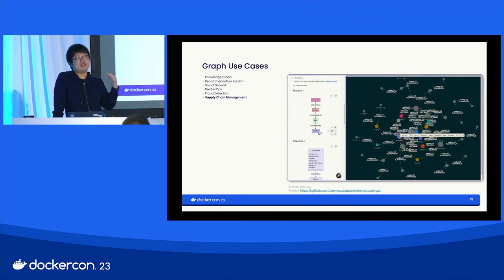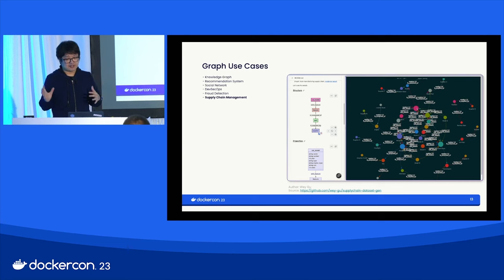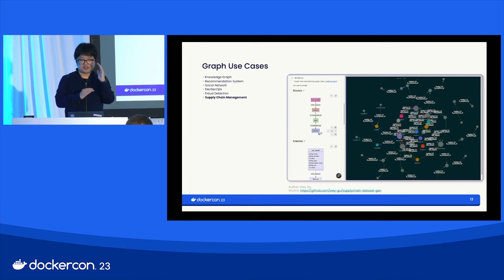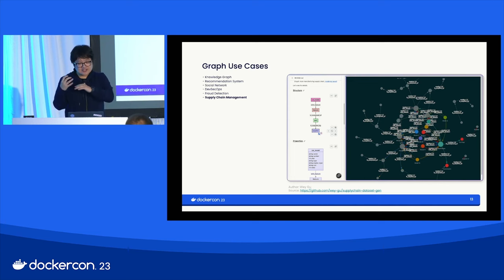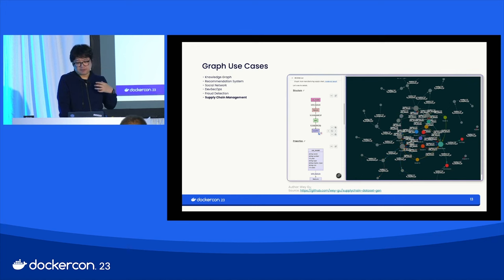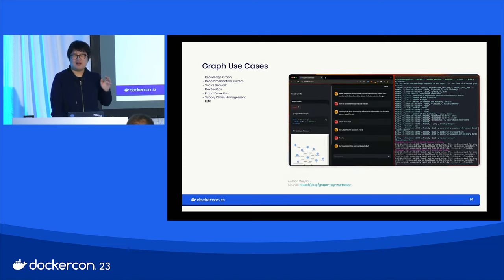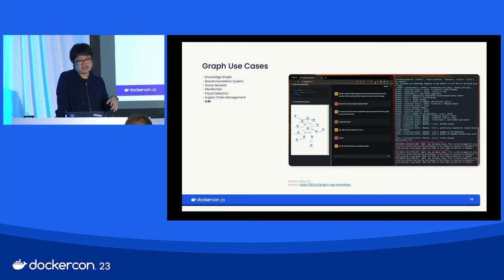In manufacturing — a real non-digital use case — the car manufacturing supply chain example shows you can put features, modules, components, and suppliers all in one graph. The insights that can be inspected this way are things we couldn't imagine otherwise. It's a very interesting way to set up your service features that wouldn't be possible without graph.